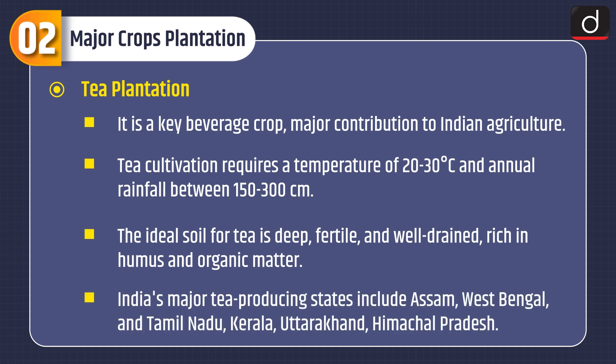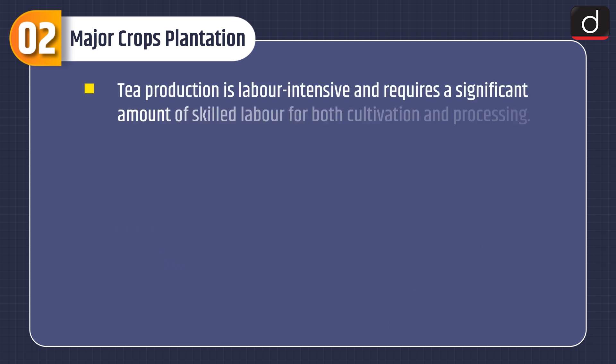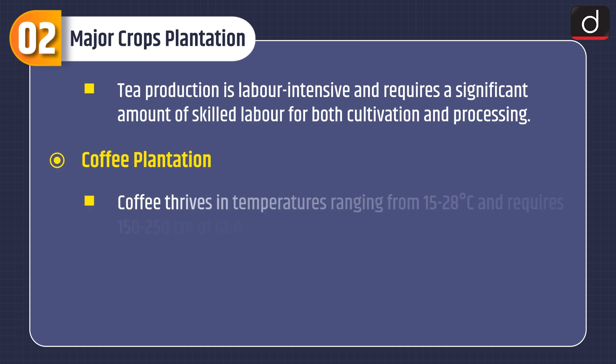India's major tea-producing states include Assam, West Bengal, Tamil Nadu, Kerala, Uttarakhand, and Himachal Pradesh. Tea production is labor-intensive and requires a significant amount of skilled labor for both cultivation and processing.